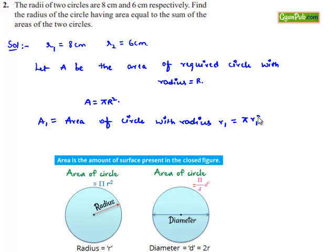Let A1 be the area of circle with radius R1, that is equal to π R1², and A2 be the area of circle with radius R2, that is equal to π R2².